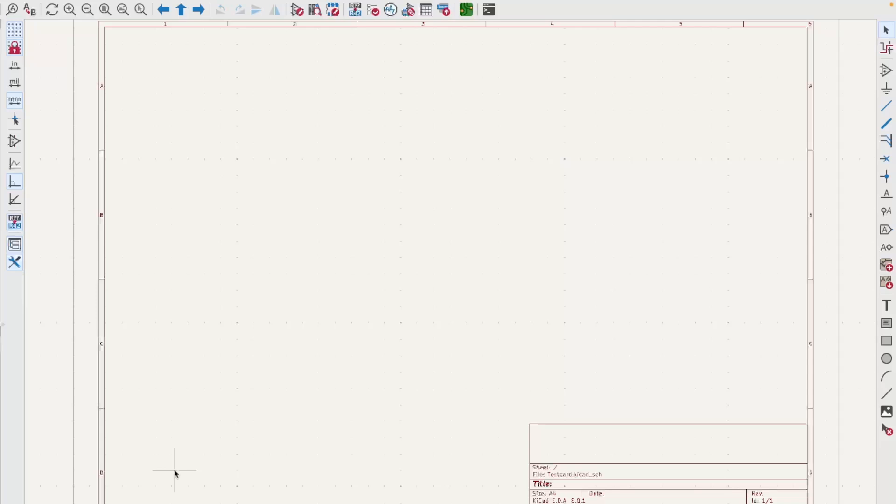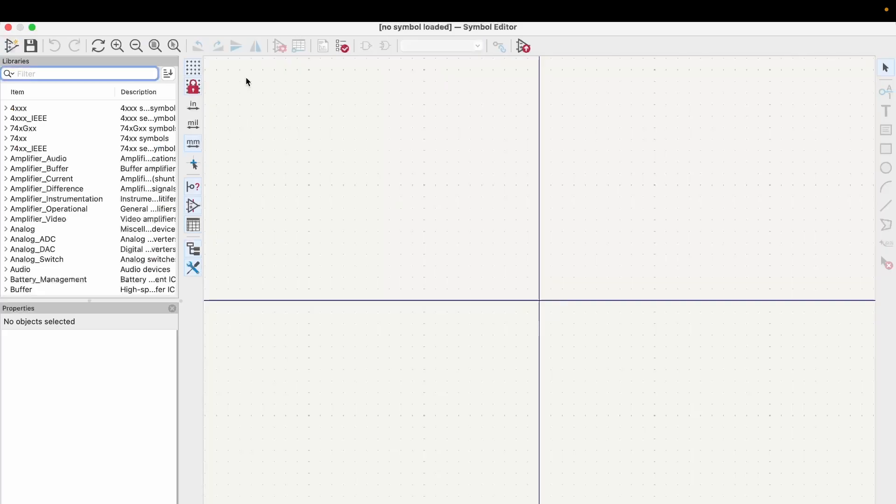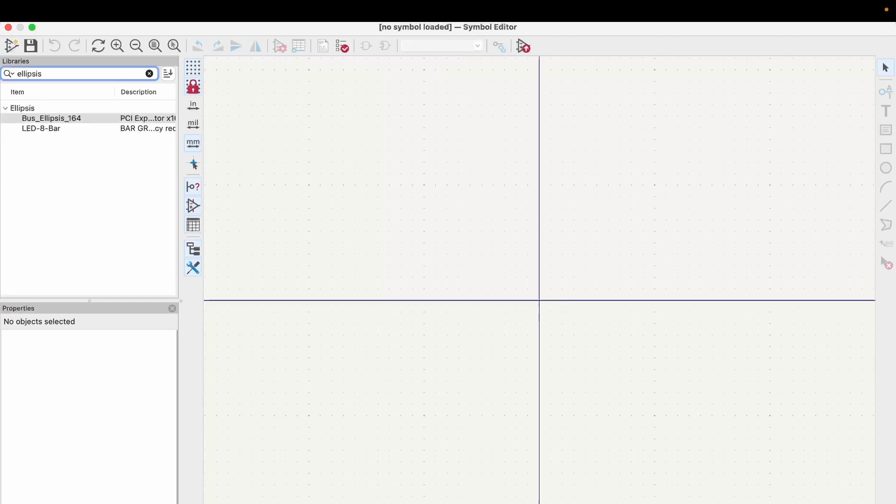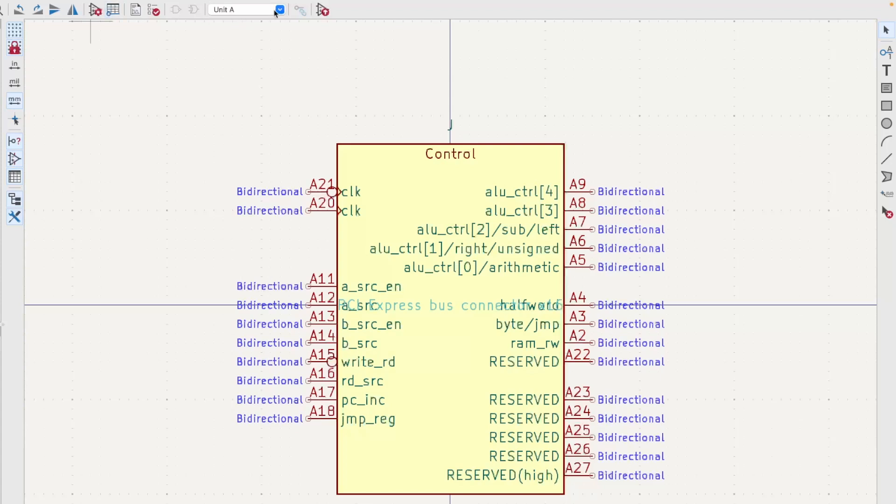The card edge has three main buses that are 32 bits each and other control lines that I'll want to write to and read from for testing. I've created a custom symbol in KiCad for the card edge which I can look at with the KiCad Symbol Editor. If I search for Ellipsis, I can see the custom symbols I've created. It's the 164 pin bus here that I'm interested in. If I open that up we can see there are multiple units. Each bus is within its own unit and each control is within its own unit.